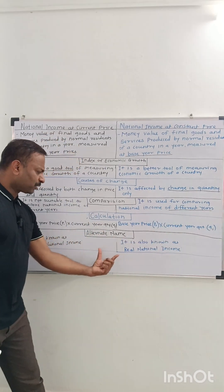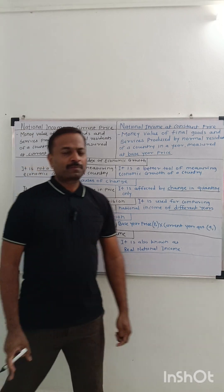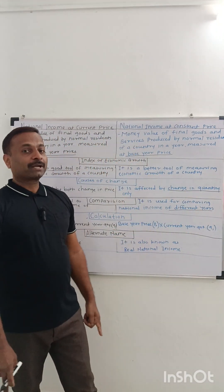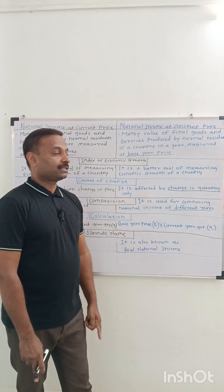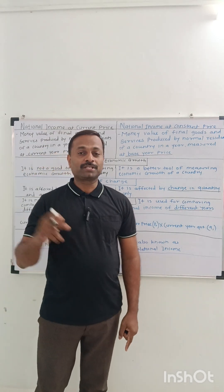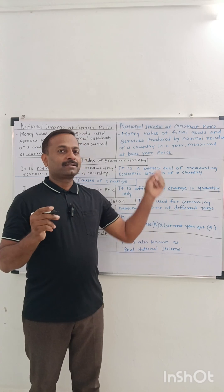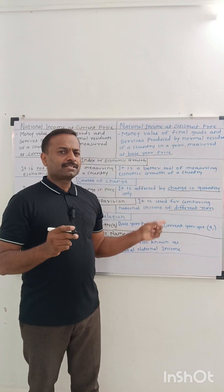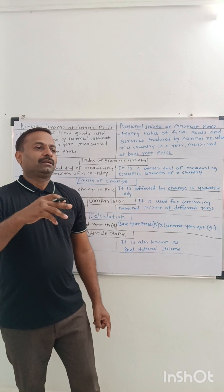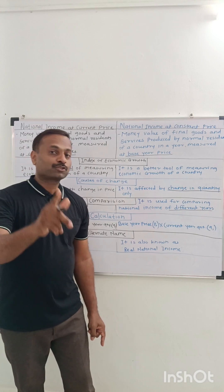Last point: alternative names. National income at current prices is also known as nominal income, whereas national income at constant prices is also known as real income. The name itself explains it — nominal income versus real income. Real income is the good indicator for showing differences in national income over time. Thank you so much.